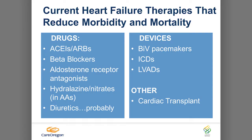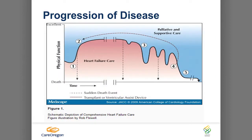For HF-REF, we go up on the medications, then we start thinking about BiVs or a defibrillator, and then if that doesn't work, we want to talk about VADs, and then transplants. The progression of the disease: stage C and then stage D.